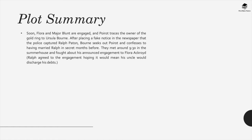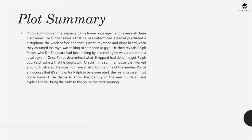Soon, Flora and Major Blunt are engaged and Poirot traces the owner of the gold ring to Ursula Bourne. After placing a fake notice in the newspaper that the police captured Ralph Patton, Bourne seeks out Poirot and confesses to having married Ralph in secret months before. They met around 9:30 in the summer house and argued about his announced engagement to Flora Ackroyd. Poirot summons all the suspects to his home once again and reveals all these discoveries. He further reveals that Ackroyd purchased a dictaphone the week before, and that is what Raymond and Blunt heard when they assumed Ackroyd was talking to someone at 9:30.